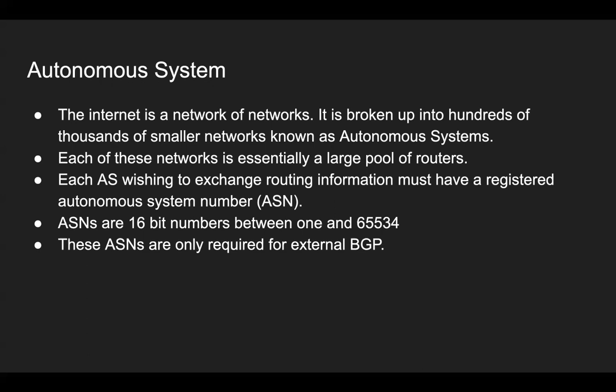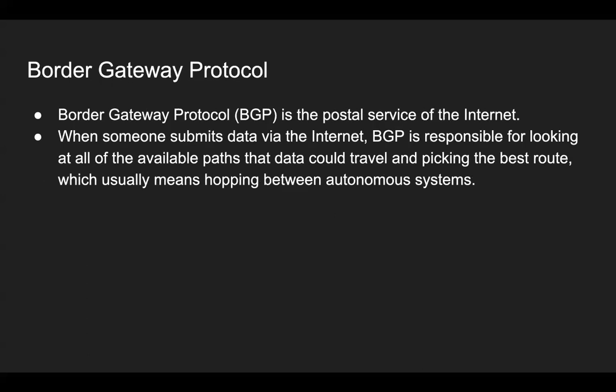So I hope you understand in very simple layman's terms that the internet is nothing but a network of networks broken up into a lot of autonomous systems consisting of routers. Border gateway protocol is very essential for the entire internet to function because it is the postal service of the internet. Something we recently saw in regards to WhatsApp, Facebook, and Instagram going down was mainly because of a wrong BGP configuration that was submitted to a router.